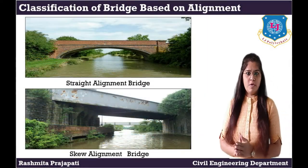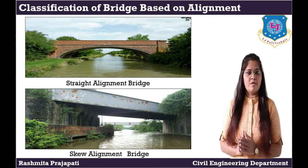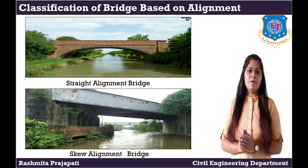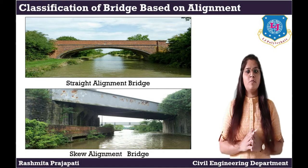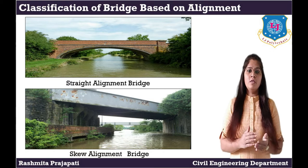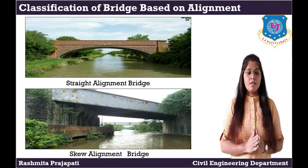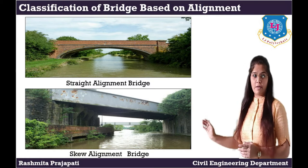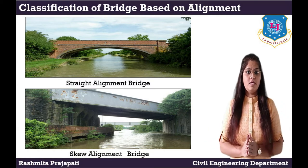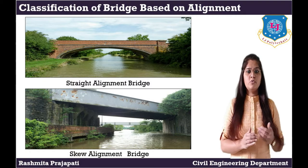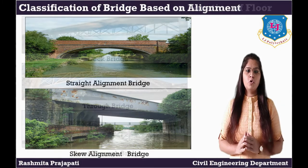Classification of bridge based on alignment. First one is straight alignment bridge: when the alignment of the bridge is perpendicular to the central line of the river, it is called a straight bridge or square bridge. Second one is skew alignment: when the alignment of a bridge is not perpendicular to the central line of a river, it is called a skew bridge.